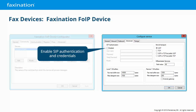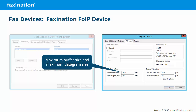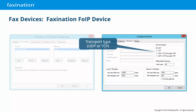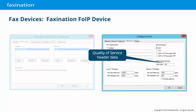On the Advanced tab, we can enable SIP authentication and supply any credentials required for SIP communication. Maximum Buffer Size and Maximum Datagram Size are the capabilities of the FaxNation FOIP device that we pass to the fax gateway during the SIP invite. You can select the transport type — either UDP or TCP — but this must be set to UDP mode or Prefer UDP mode, as TCP is not supported in the FaxNation FOIP device at this time. The Differentiated Services setting relates to quality of service on the network and packet priority.